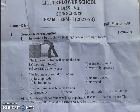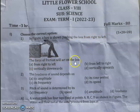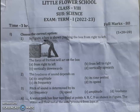The first question: in the figure, a boy is shown pushing the box from right to left. The force of friction will act on the box from — right to left, left to right, vertically downwards, or vertically upwards? The direction of friction is always opposite to the direction of motion, so the answer is option B: from left to right.